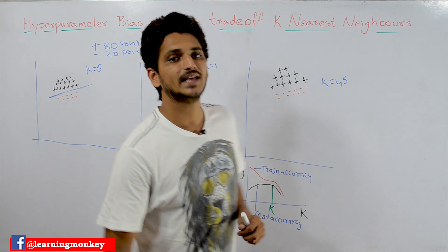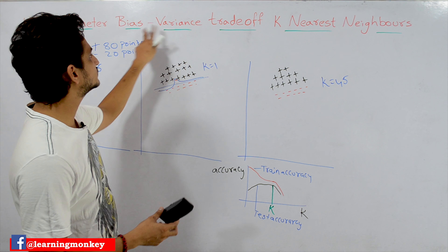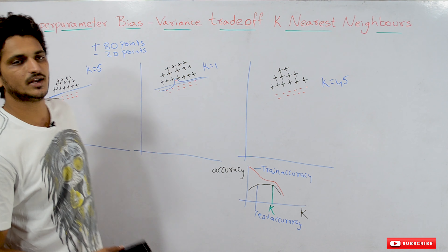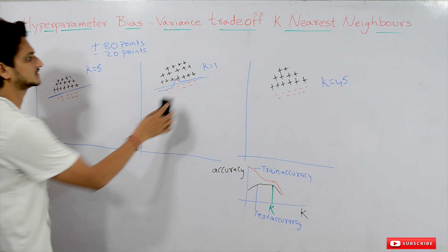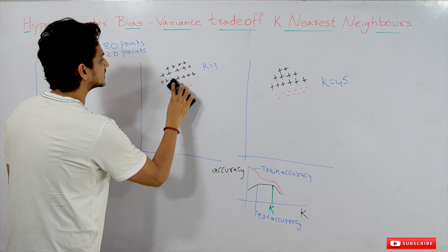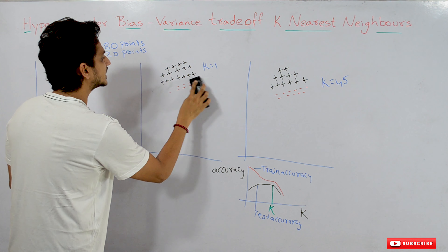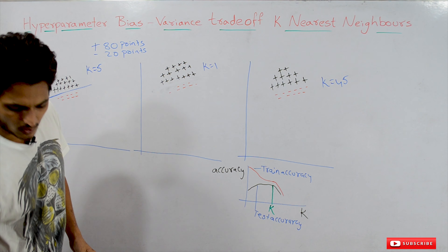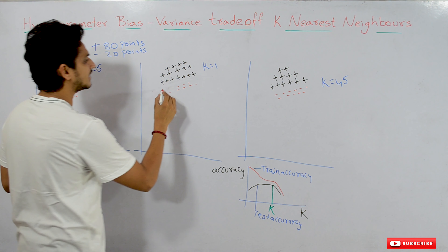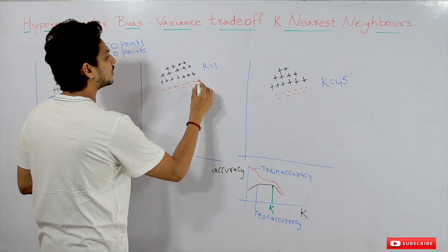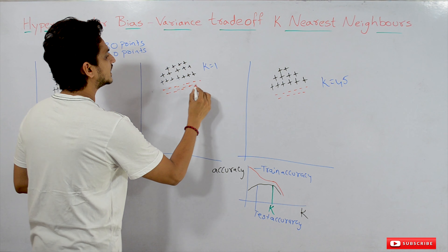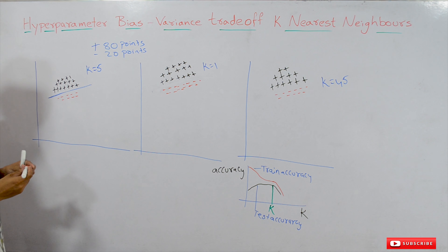Let's take an example and understand what the bias-variance trade-off is in K-nearest neighbors. The example dataset we consider here has 100 data points: 80 positive data points and 20 negative data points.